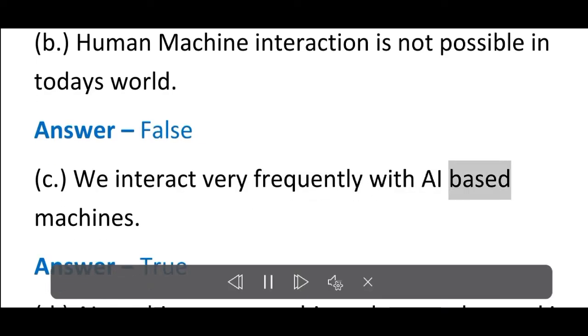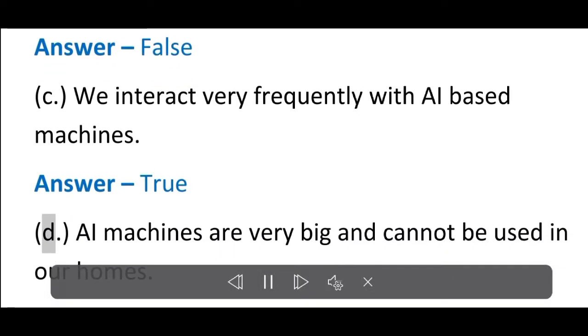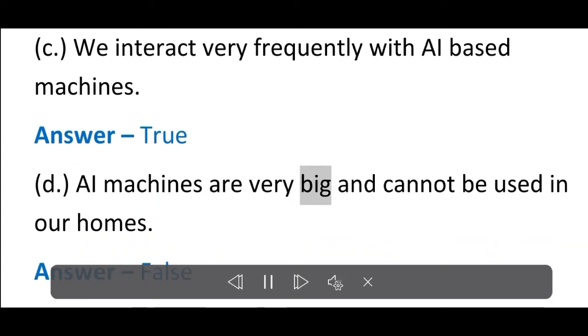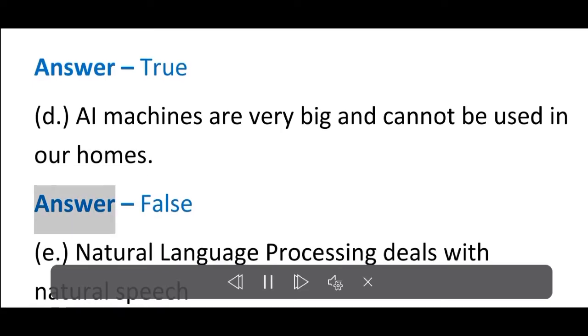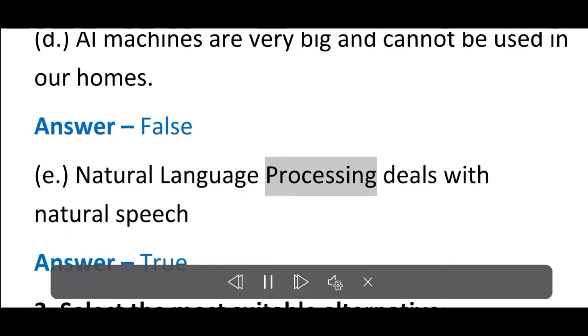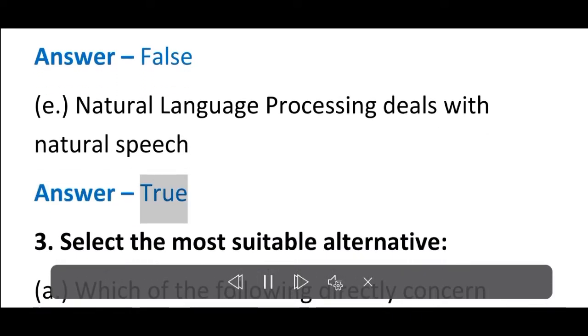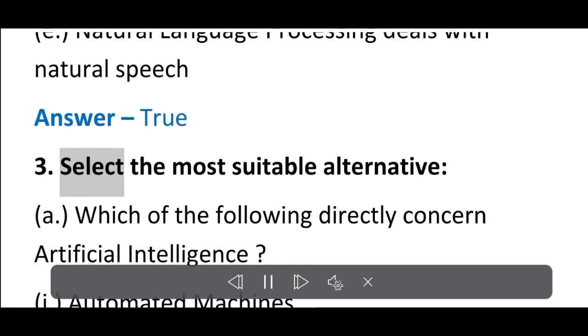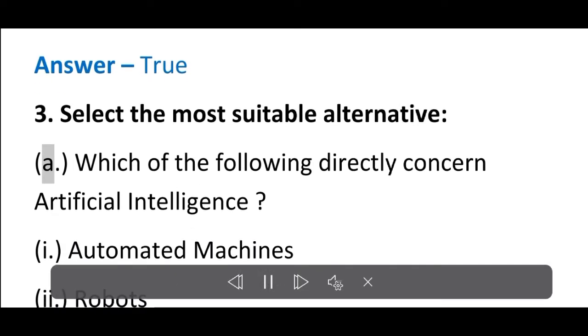C. We interact very frequently with AI-based machines. Answer: True. D. AI machines are very big and cannot be used in our homes. Answer: False. E. Natural language processing deals with natural speech. Answer: True.